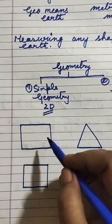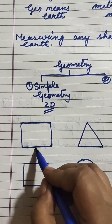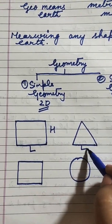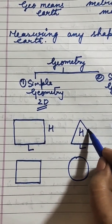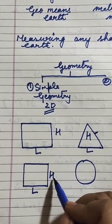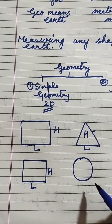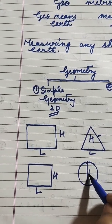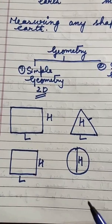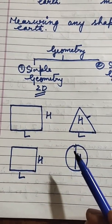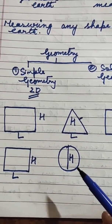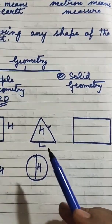So students, here you can see only the length and the height. Here you can see only height. So students, these are two dimensional shapes. It is in simple geometry.